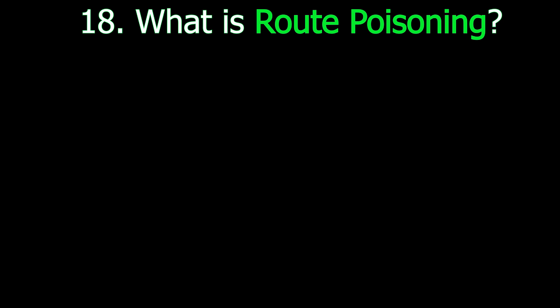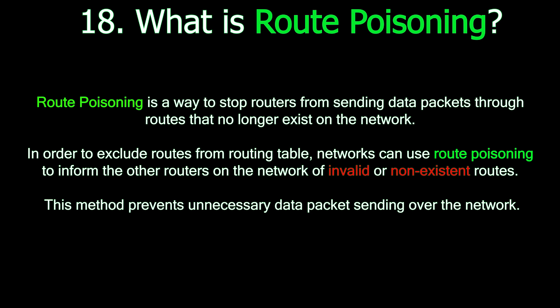Question number eighteen: What is route poisoning? Route poisoning is a way to stop routers from sending data packets through routes that no longer exist on the network. In order to exclude routes from routing tables, networks can use route poisoning to inform the other routers of invalid or non-existent routes. This method prevents unnecessary data packets from being sent over the network.